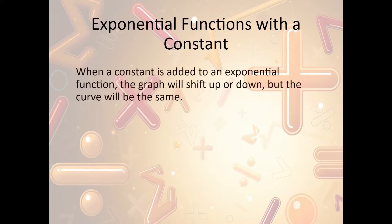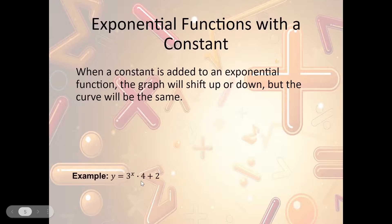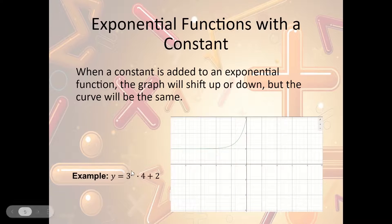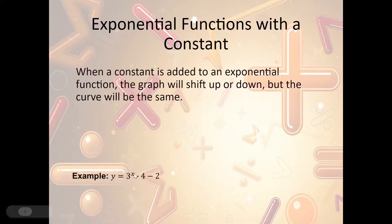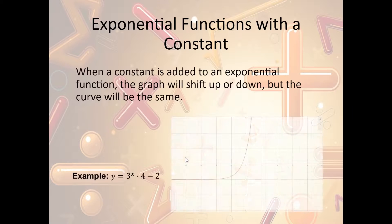What if we add a constant? When a constant is added to an exponential function, the graph will shift up or down but the curve stays the same. So y = 3ˣ · 4 + 2 looks exactly like y = 3ˣ · 4, except we slide it up two units — now the asymptote line it doesn't cross is y = 2. With minus 2, we slide it down, and the line it won't cross becomes y = negative 2.